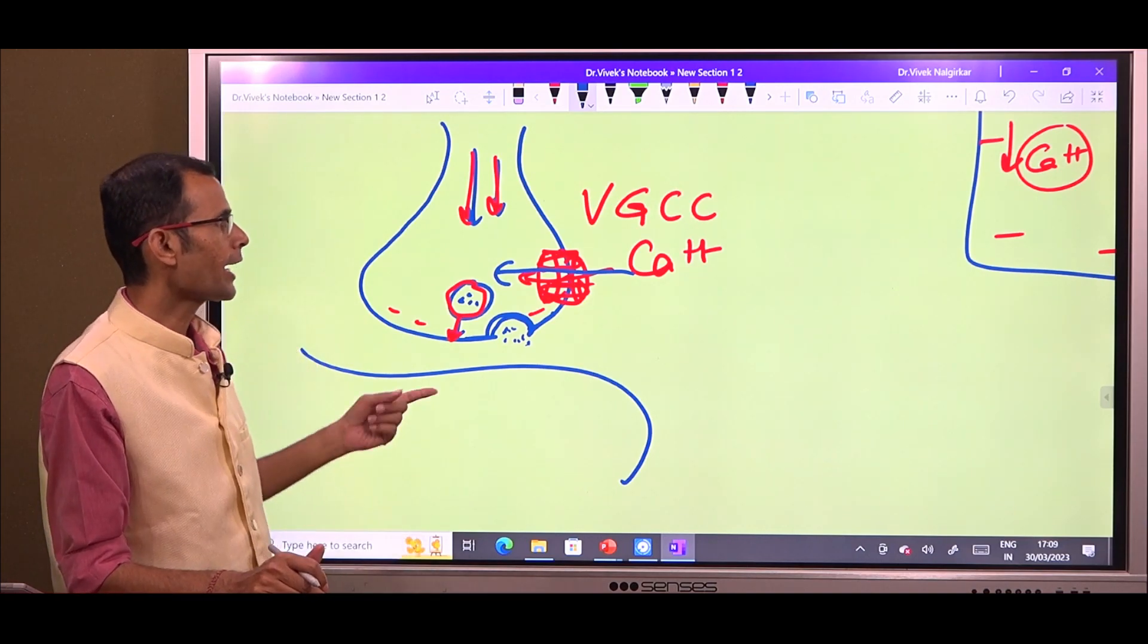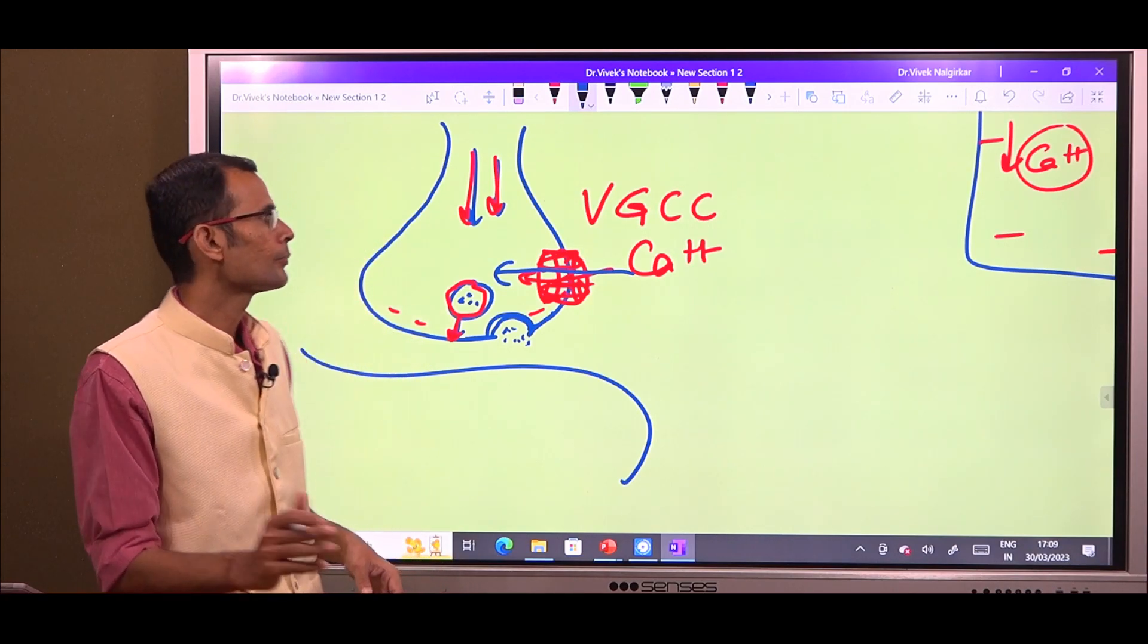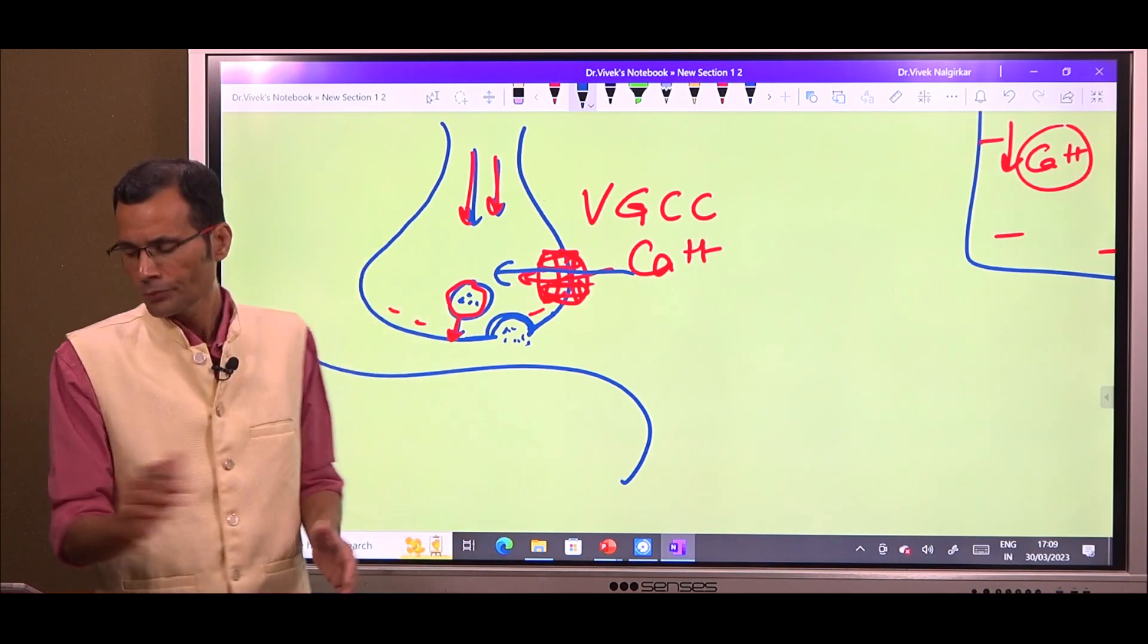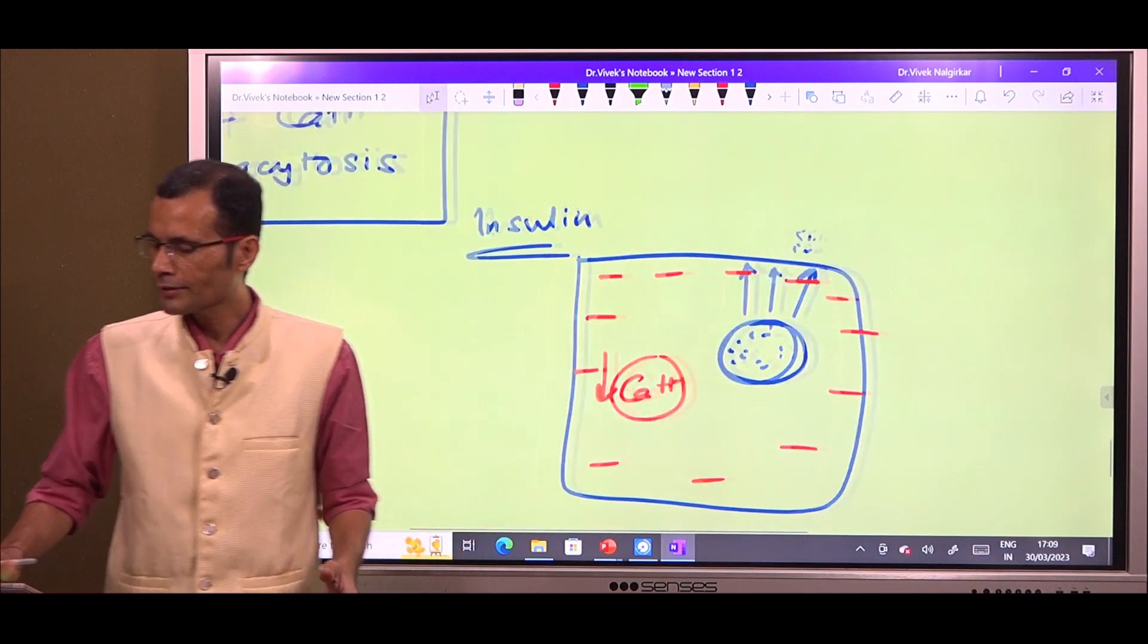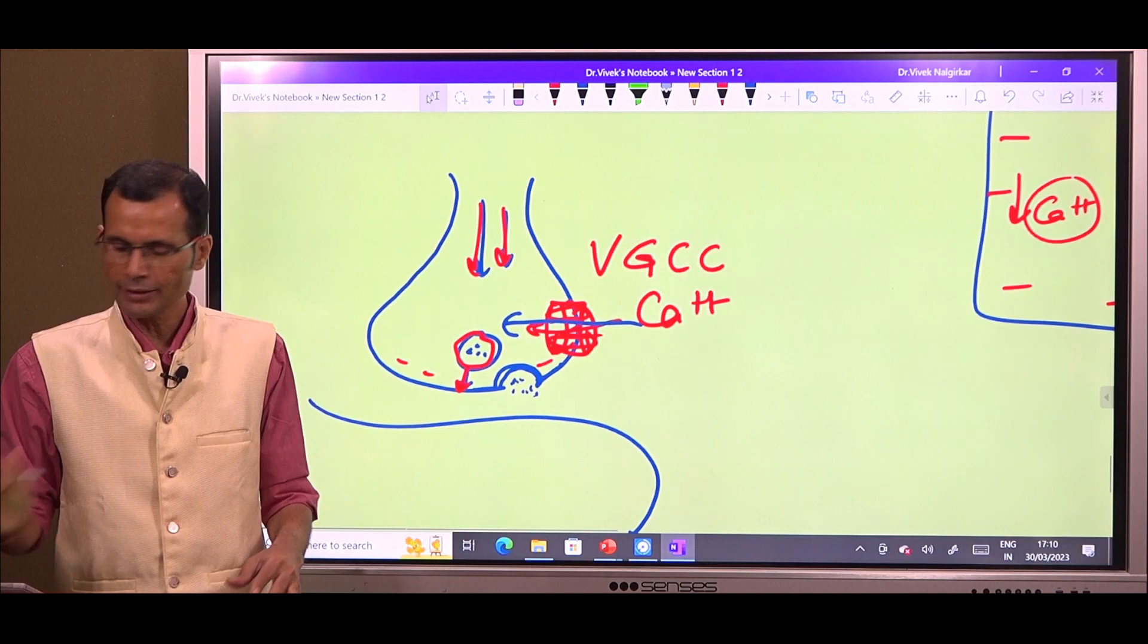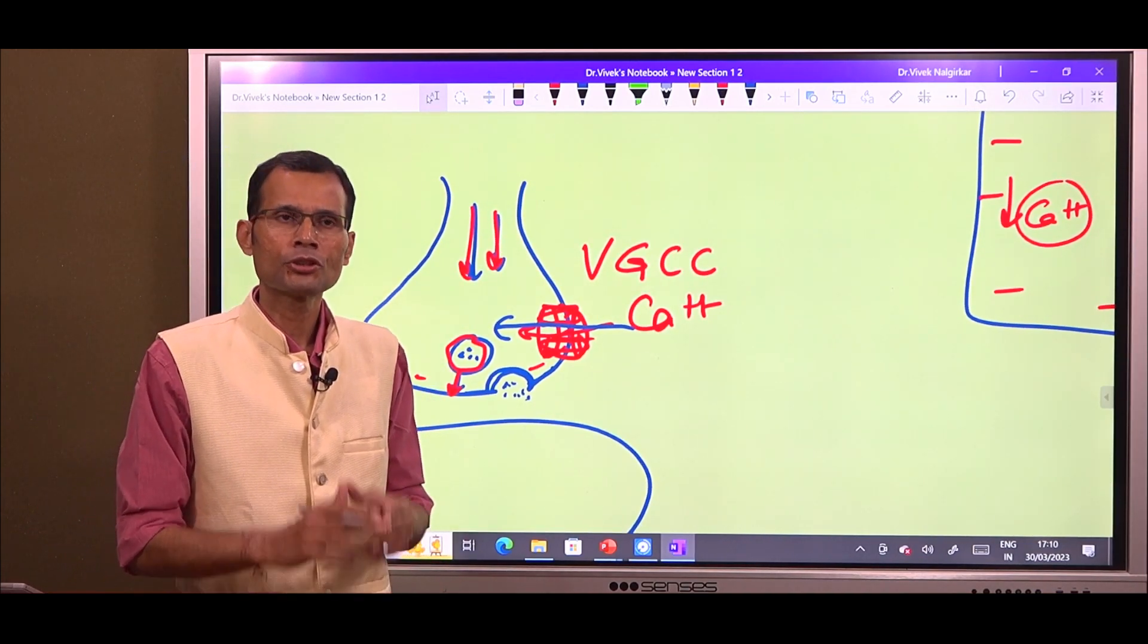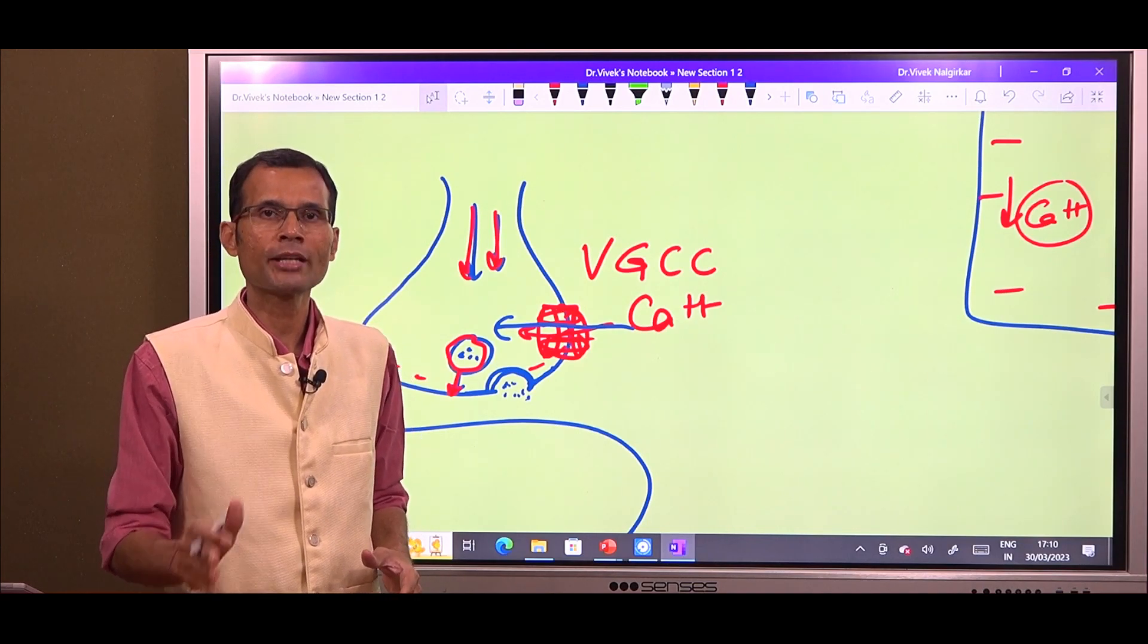So, that is the role of calcium and that is why we need voltage-gated calcium channels for the sake of exocytosis or the channels which open only with specific event. Whether it is a pancreatic beta cell for the release of insulin or whether it is release of neurotransmitter. That is the small little concept related to the role of calcium in exocytosis.